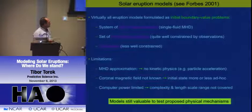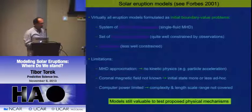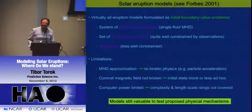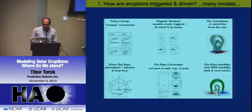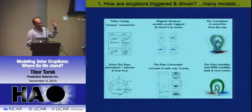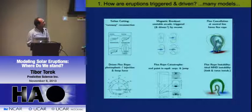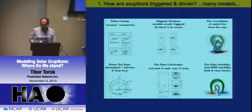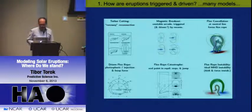Still, these models are valuable because we can use them to test proposed mechanisms. And as you will see later, we are slowly getting toward more and more realism. This brings me to the first point: how are eruptions triggered? This is a big topic with a lot of controversy. There are a bunch of models—these are only a few that have been proposed—and I have been working on one called flux rope instability.